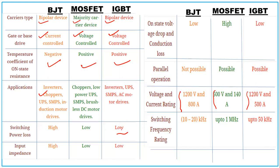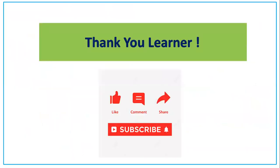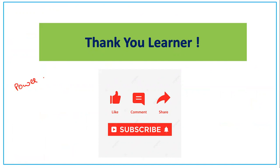Switching frequency: BJT is 10 to 20 kHz, MOSFET up to 1 MHz, and IGBT up to 50 kHz. I hope you now have a better idea of what these switches are and when to use power MOSFET, power BJT, or IGBT.